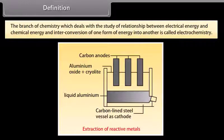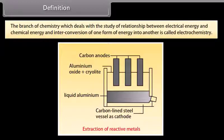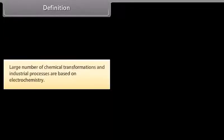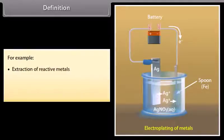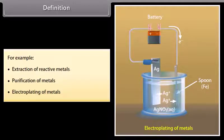Definition: The branch of chemistry which deals with the study of the relationship between electrical energy and chemical energy, and the interconversion of one form of energy into another, is called electrochemistry. A large number of chemical transformations and industrial processes are based on electrochemistry — for example, extraction of reactive metals, purification of metals, and electroplating of metals.